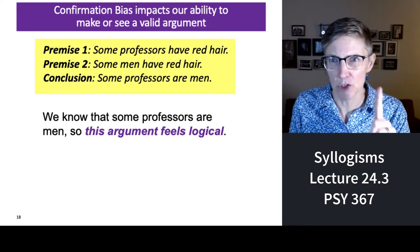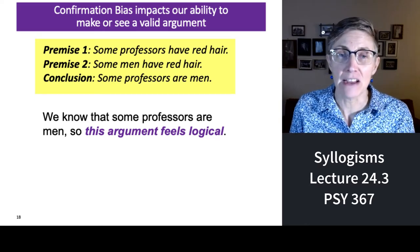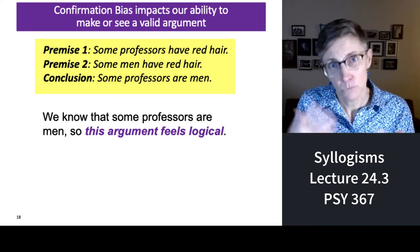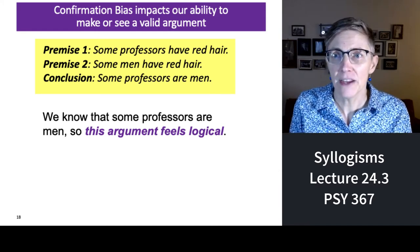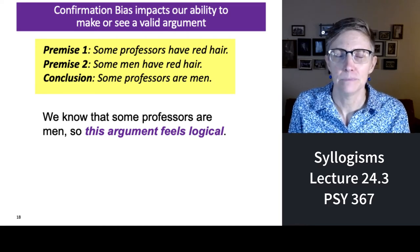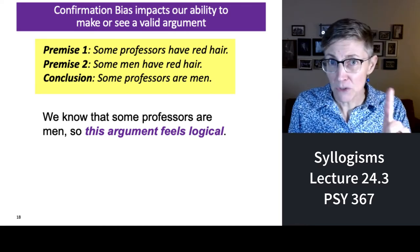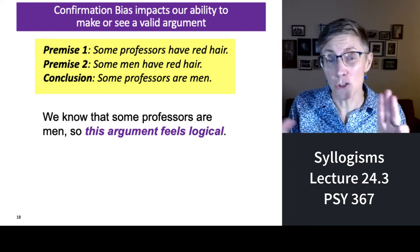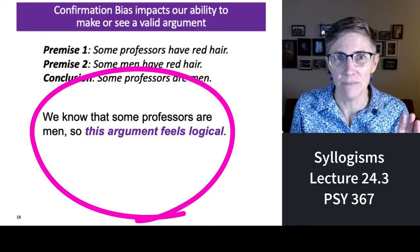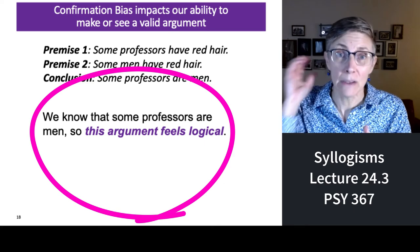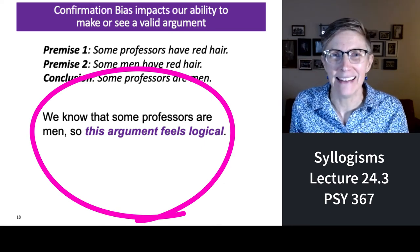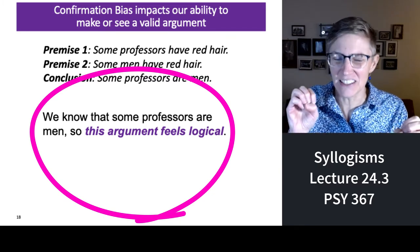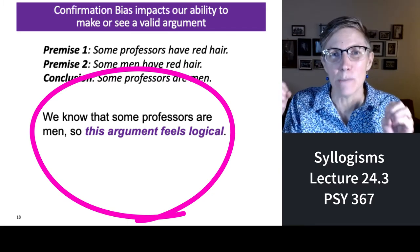Here's another syllogism. Premise one: some professors have red hair. Sure. Premise two: some men have red hair. Sure. Conclusion: therefore, some professors are men. Premise one is true, premise two is true, and the conclusion is a true statement. But it's not a valid argument. Because the conclusion is a true statement — we know that some professors are men — it's hard for us to see the invalidity in the argument. It's hard for us to see the argument as illogical.